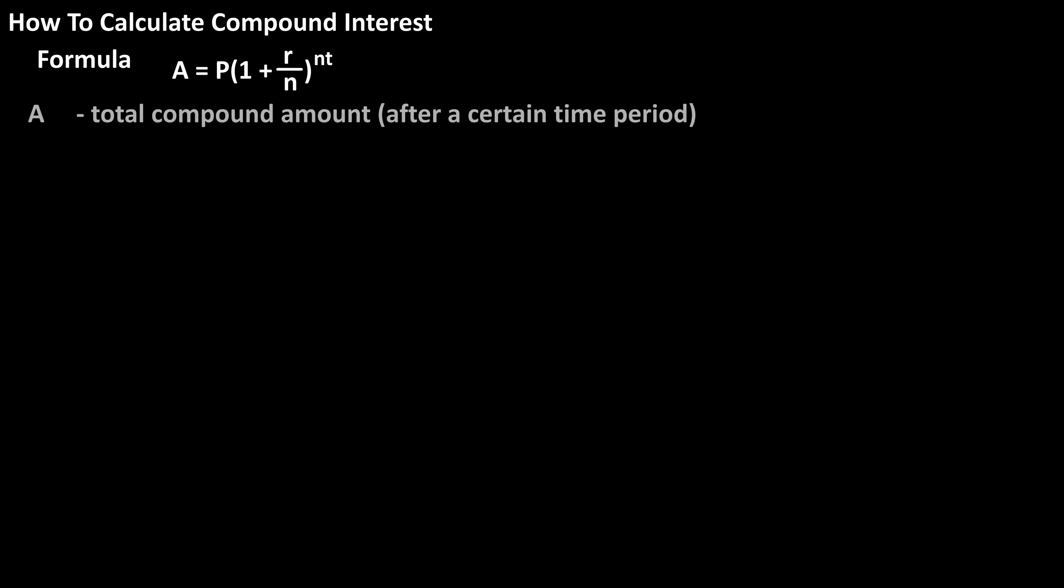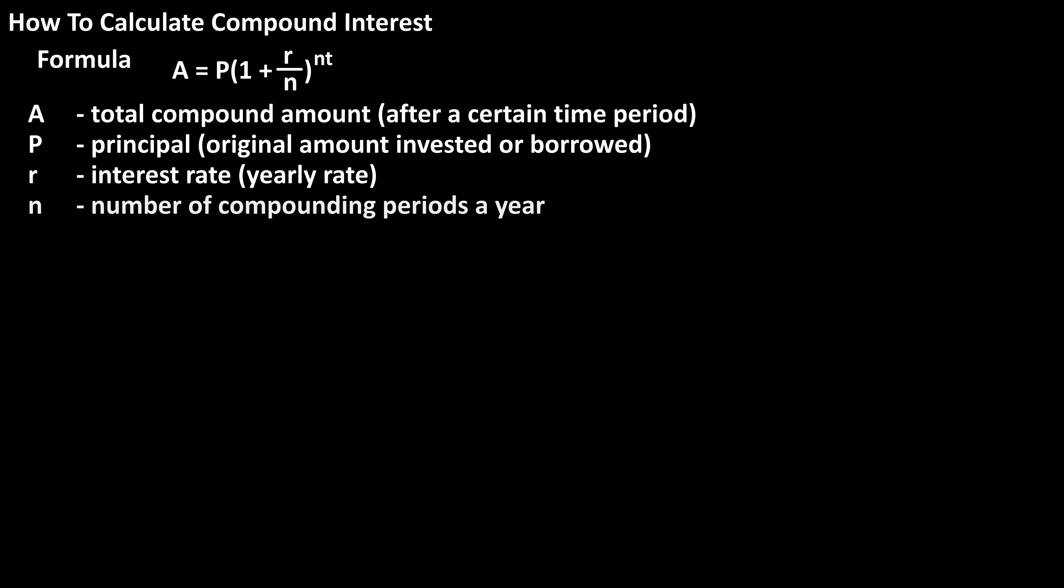In this formula, A represents the total compound amount after a certain period of time, P represents the principal or the original amount invested or borrowed, R represents the interest rate, N represents the number of compounding periods per year, and T represents the time in years.